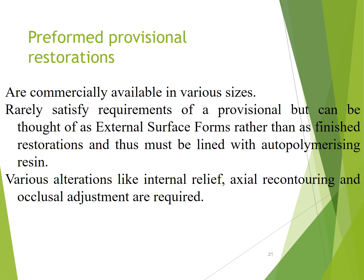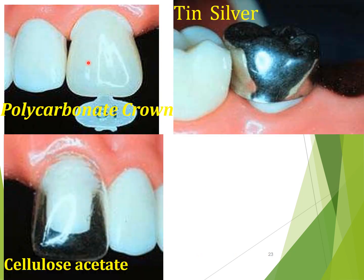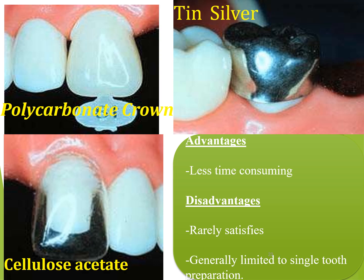Pre-formed provisional restorations are commercially available in many sizes. They don't really satisfy all the requirements of a provisional but can be used sometimes, and they can be lined with autopolymerizing resins. Various alterations like internal relief, axial contouring, and occlusal adjustments are required — so basically these should not generally be used. Materials used to make preformed provisionals are polycarbonate, cellulose acetate, aluminum, tin silver, and nickel. Advantages are that they are less time-consuming. Disadvantages are that they rarely satisfy the patient and are generally limited to single-unit preparations.